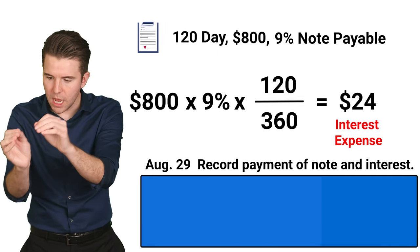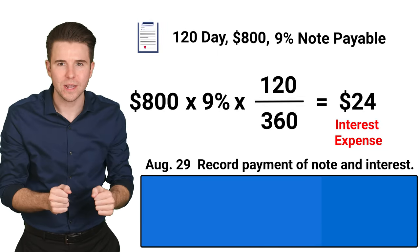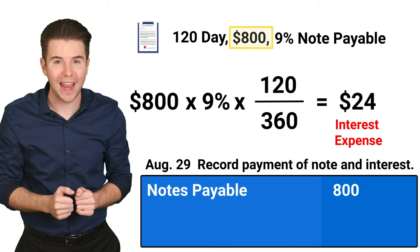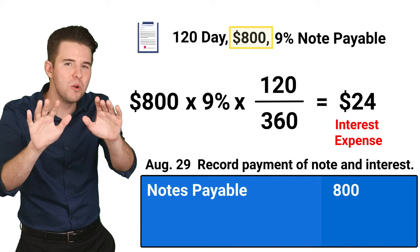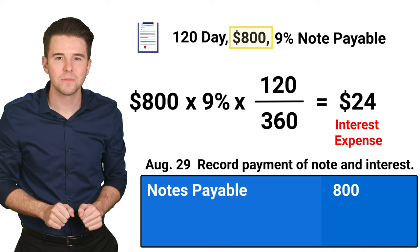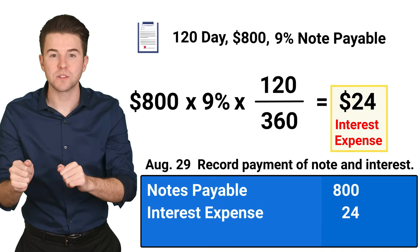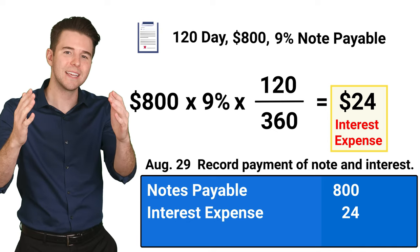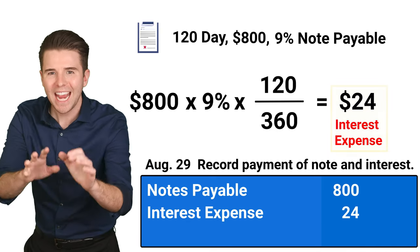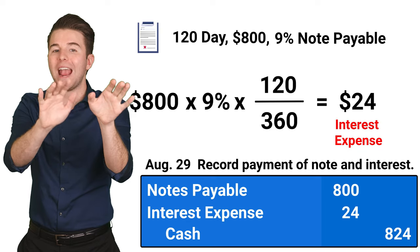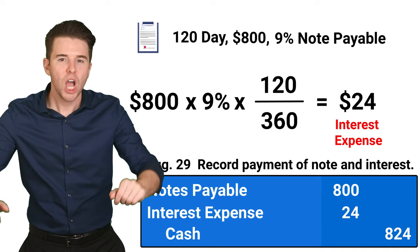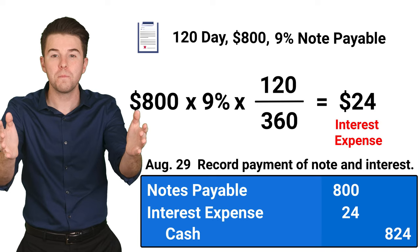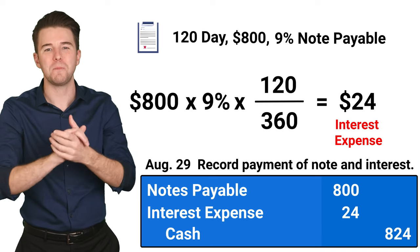To record our repayment plus interest, we debit notes payable for $800 to remove that liability account, debit interest expense for $24 to increase that expense account, and credit cash for $824 to decrease that asset account for the note payable and interest paid.